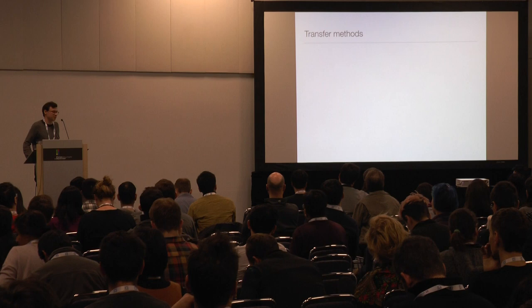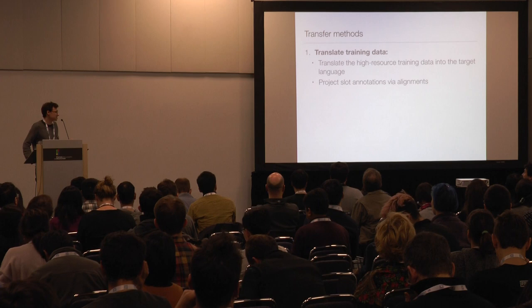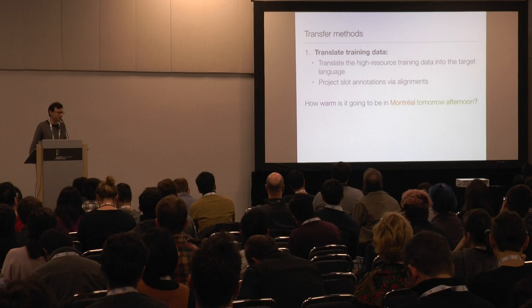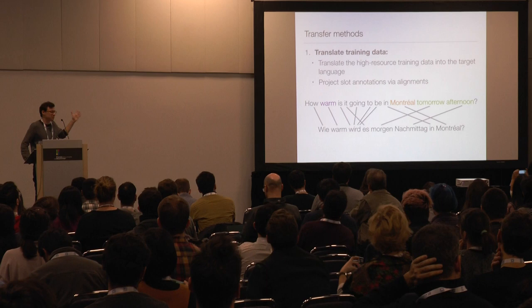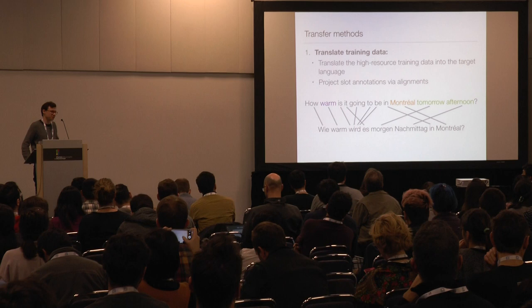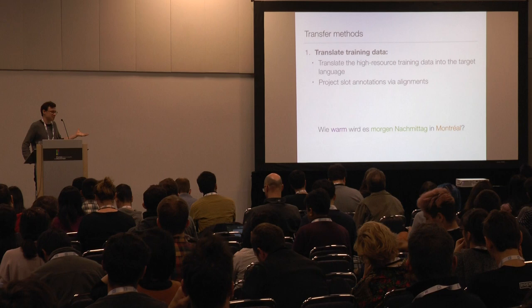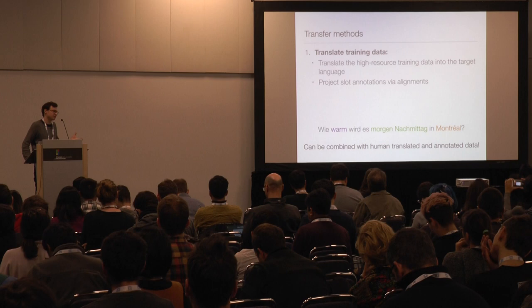The first transfer method was translating the data from the high-resource language to the low-resource language and then projecting the slot annotations via alignments. For example, given a sentence like 'how warm is it going to be in Montreal tomorrow afternoon?' and translating it to German, you can automatically translate using a machine translation system. From that system you get some form of alignment — we used the attention weights — and then using that alignment you can project annotations to the target language, giving you a new dataset in a new language. Crucially, this can also be combined with human-annotated data, so if you have a little bit of data in the target language, you can combine clean and noisy translated data.